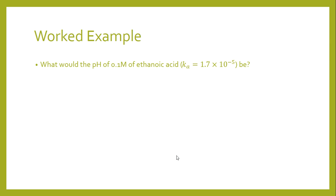So the question is: what would the pH of 0.1 molar ethanoic acid be? And you've got a Ka value of 1.7 times 10 to the minus 5. So from the previous slide, we came up with this equation, and really all you need to do is substitute and solve it.